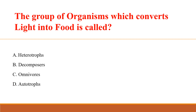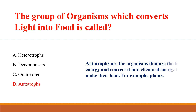The group of organisms which convert light into food is called? Answer: C. Autotrophs. Autotrophs are organisms that use light energy and convert it into chemical energy to make their food — for example, plants.